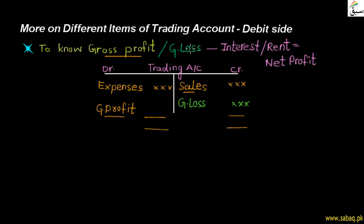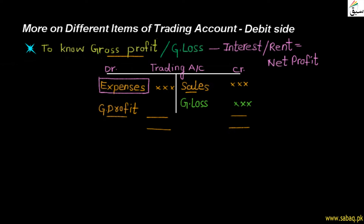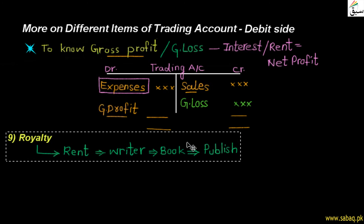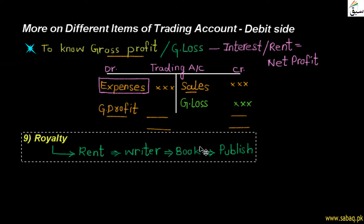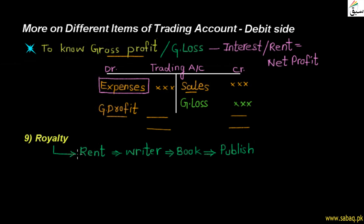Now we will see the many expenses in the trading account. In the last video we have seen eight expenses that are on the debit side of the trading account, which are related to trading. Today we will see the remaining expenses. One of them is royalty, which is also written on the debit side of the trading account.